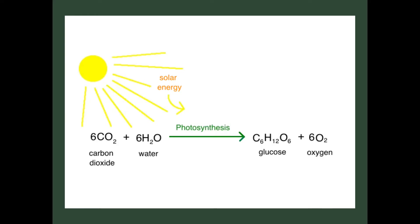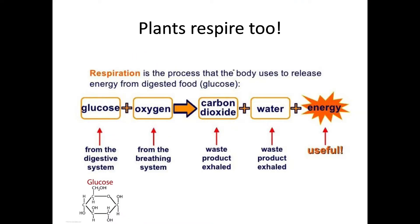Photosynthesis: if you're doing A-level biology you know all about this. Photosynthesis is where plants make their own food — they take in carbon dioxide and water and make glucose, which is a carbohydrate. There is the carbon! Thank goodness plants photosynthesize, because it's at the bottom of every food chain — if they didn't, we wouldn't be here.